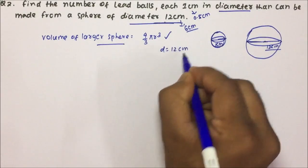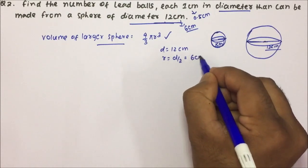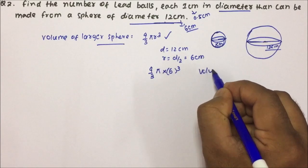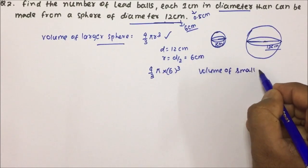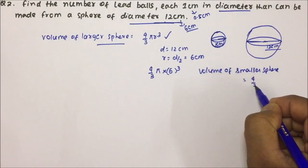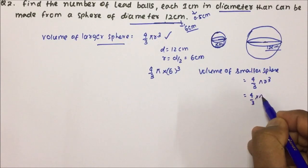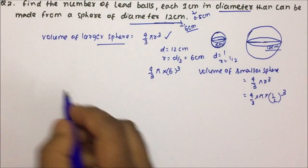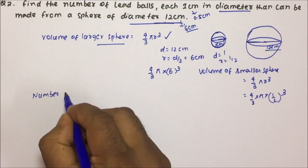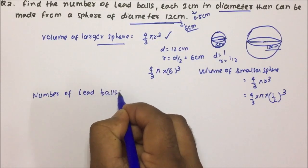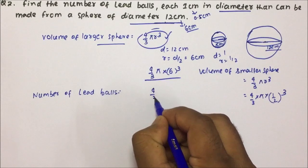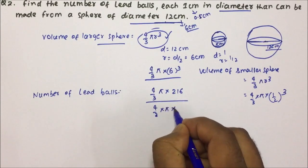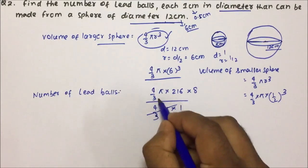Friends, diameter is 12 centimeters, so radius = 6 centimeters. Volume of the larger sphere = 4/3 π × 6³ = 4/3 π × 216. Volume of the smaller sphere = 4/3 π × (1/2)³. Number of lead balls = volume of larger sphere divided by volume of smaller sphere = (4/3 π × 216) / (4/3 π × 1/8). The 4/3 π cancels, and 1/8 becomes 8 in the numerator. So 8 × 216 = 1728.